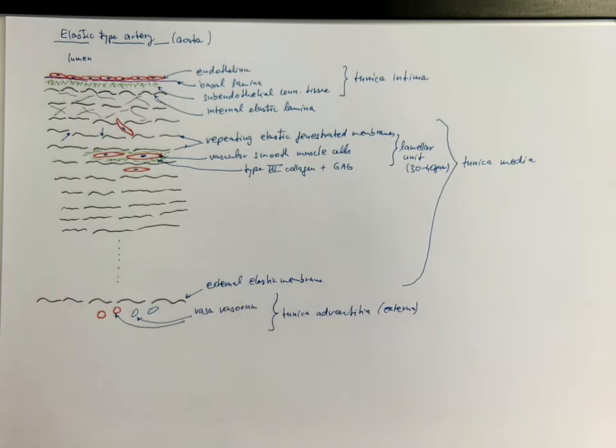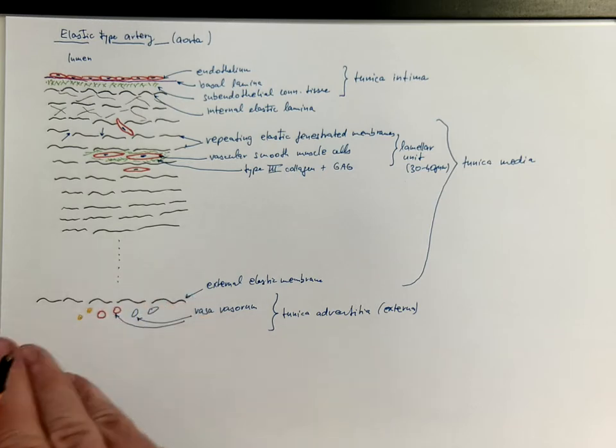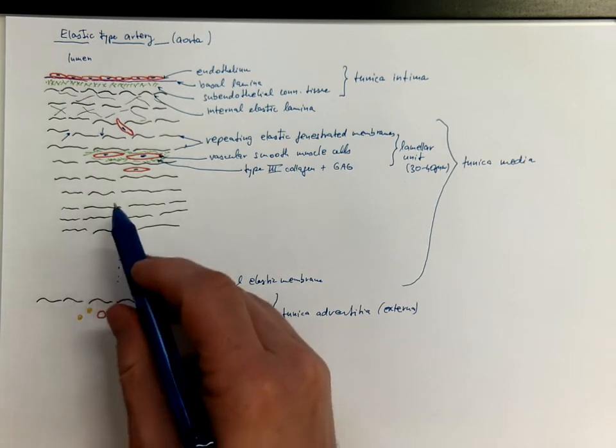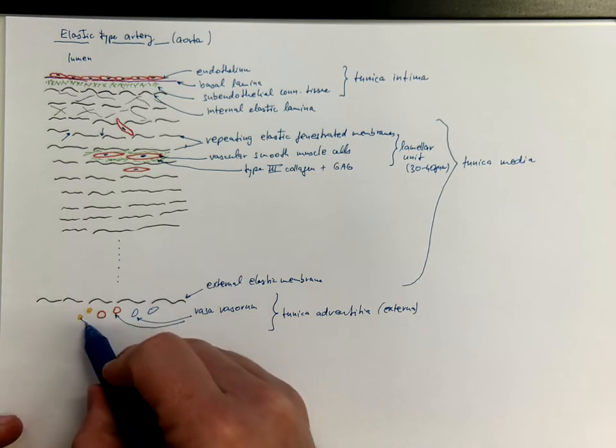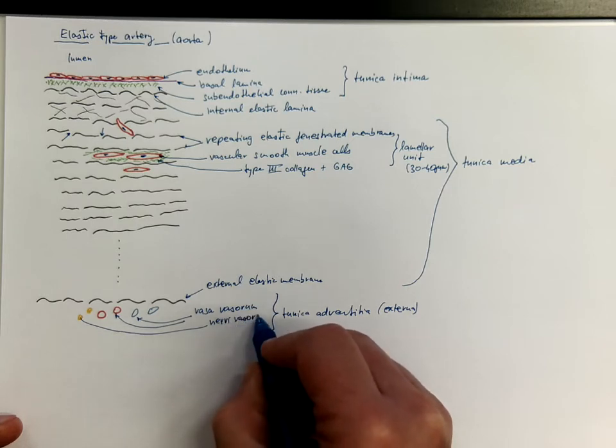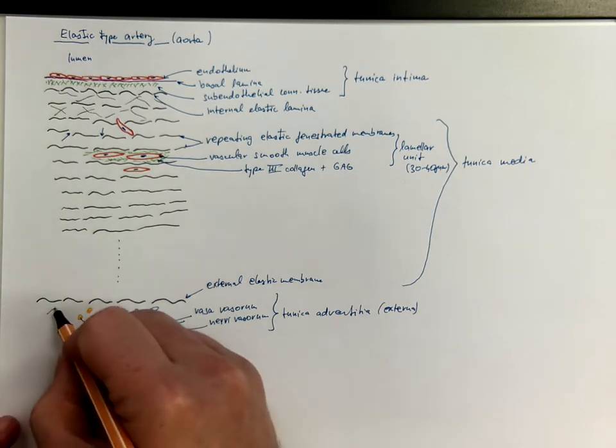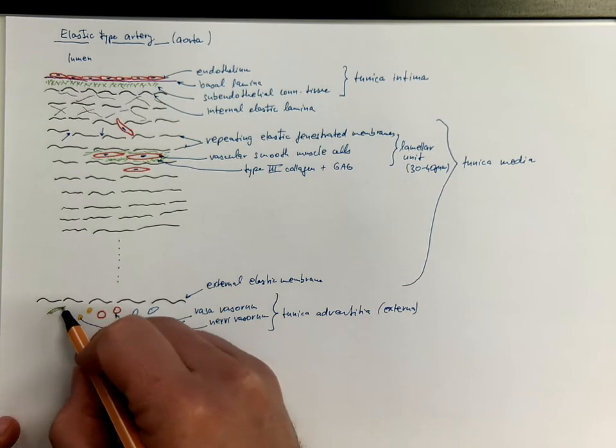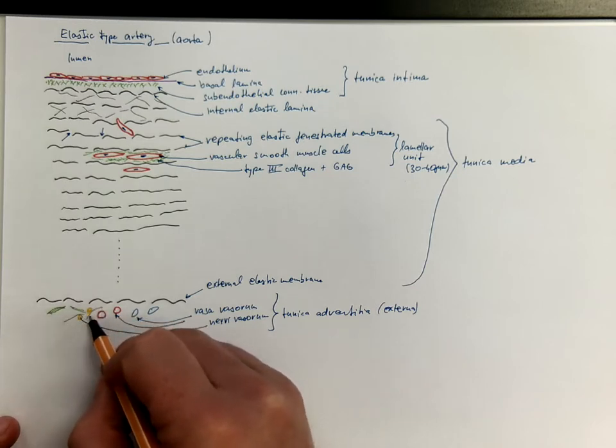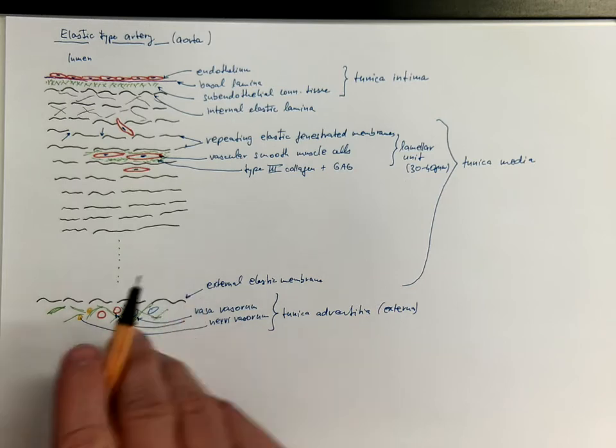And there are also autonomic nerves, responsible for the nerve supply of that smooth muscle, called nervi vasorum. The collagen in the tunica adventitia mostly consists of thicker type I collagen fibers.